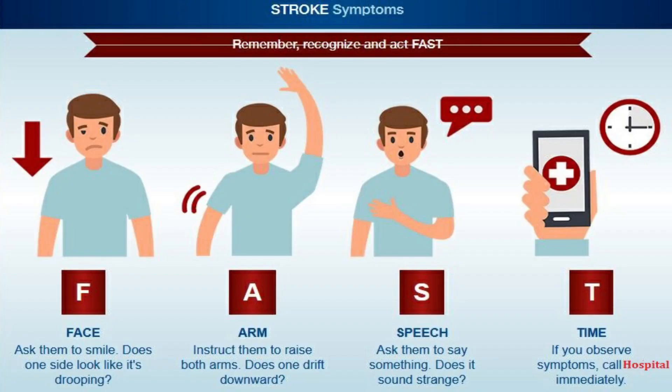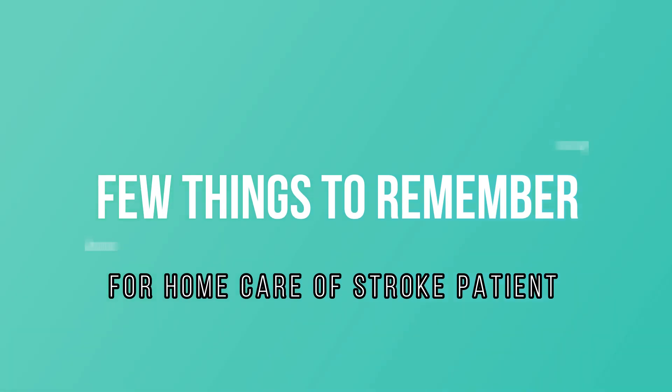FAST is an acronym to check a stroke patient at home. F stands for Face — ask the person to smile and check if one side of the face drops. A stands for Arms — ask the person to raise both arms and check if one arm drifts downward. S stands for Speech — ask the person to repeat a simple phrase and check if speech is slurred or strange. T stands for Time — if the answer is yes to any of the above, call the hospital immediately, or the patient may develop paralysis or die.